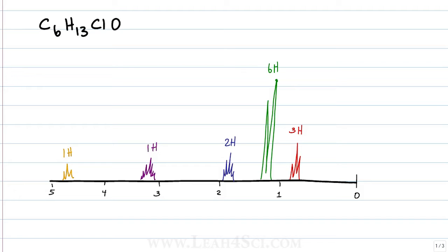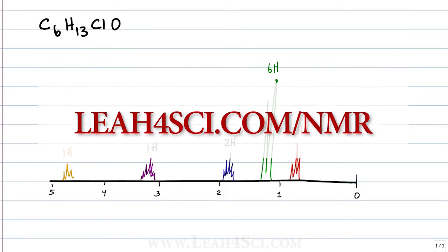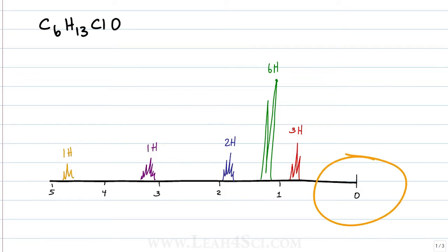I'm going to break this down and solve it the way I teach in my beginner NMR videos which you can find linked below or by going to my website leah4sci.com/NMR. I consider the right side of the graph anything near zero, the boring region. This means that the carbons and hydrogens on the right are further away from the exciting groups like halogen and oxygen in our case.